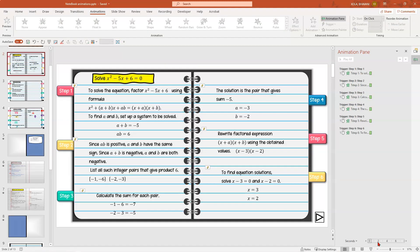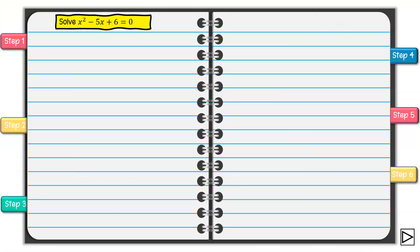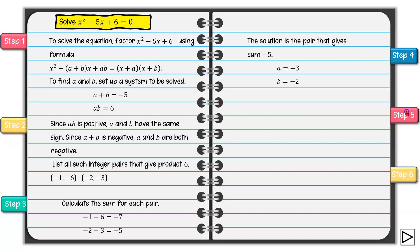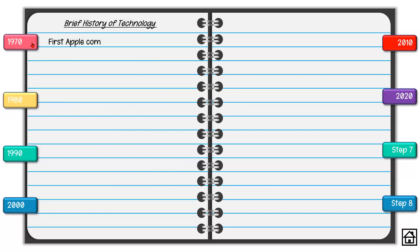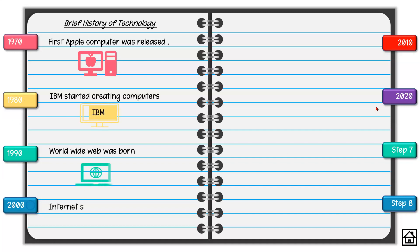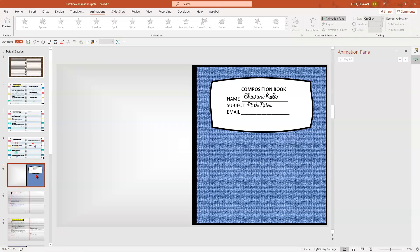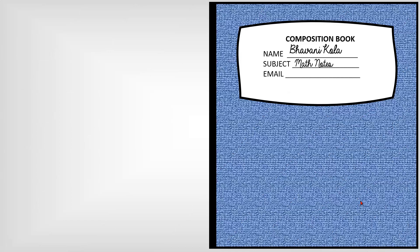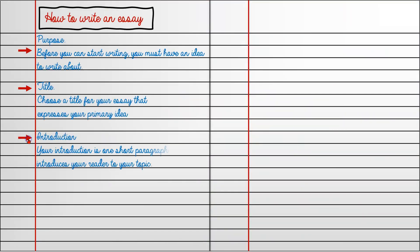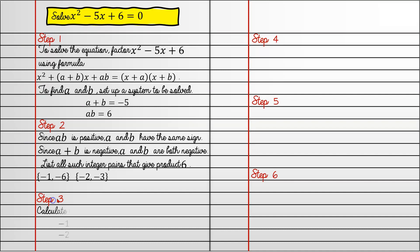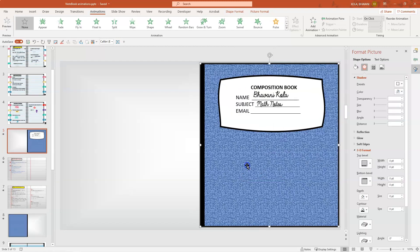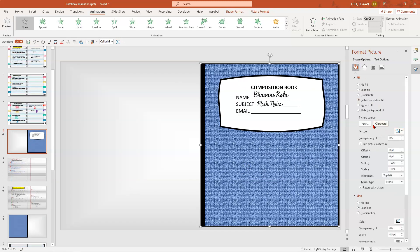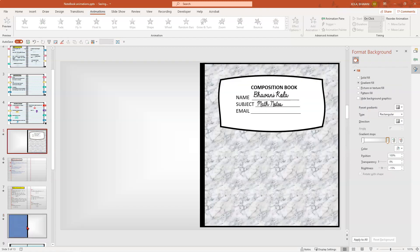Now that you've created your journal with animations, let's see how many different ways you can use it. Here is a math formula — Step 1, 2, 3, 4. You might want to put action buttons so students know where to go next. If you're an English educator, here's how to write an essay. If you're a history teacher, here's 1970, 1990, 2000. If you want a variation like a composition notebook, here you have it — your page flips and reveals steps. If you don't like the composition notebook cover, right click, format picture, and change the texture.